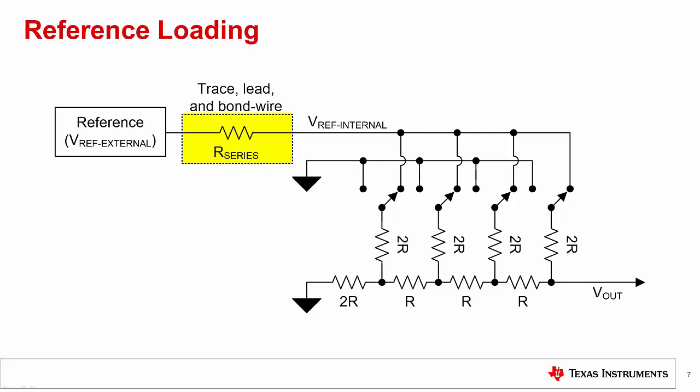As we now have a series resistance, what happens to the Vref internal voltage when the load of the R2R ladder changes? When the load increases, the Vref internal value reduces as there is now a voltage drop across Rseries. This can result in some non-linearity and gain error on a device with a single channel. But what happens in a multi-channel device?